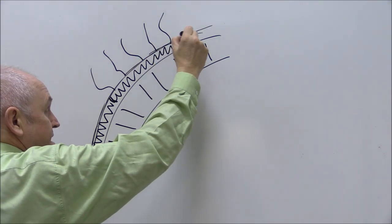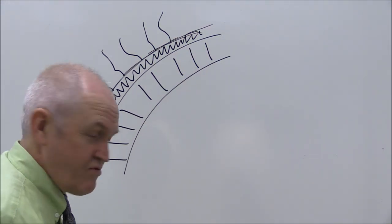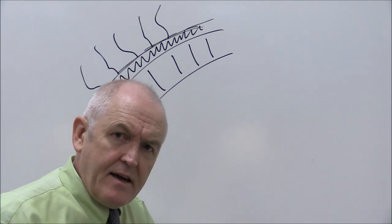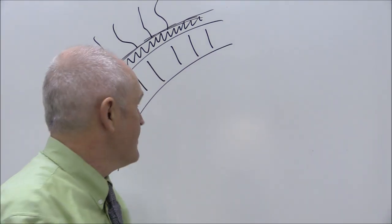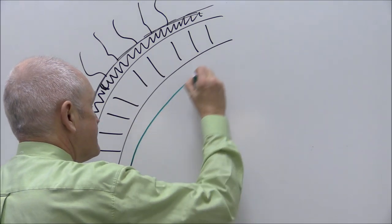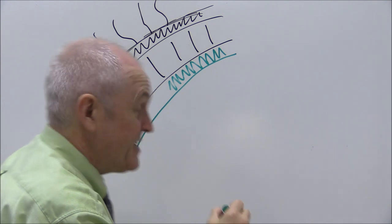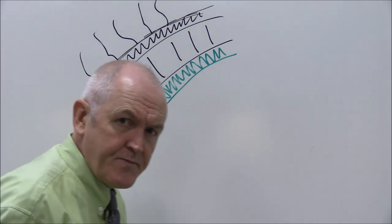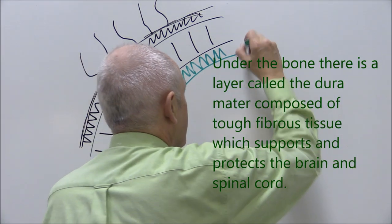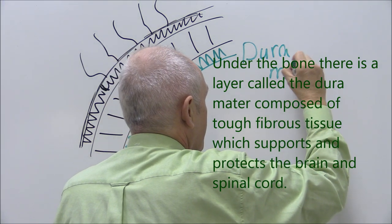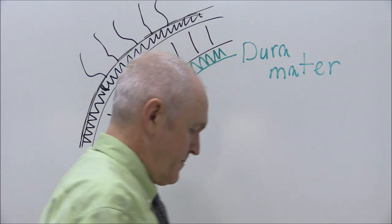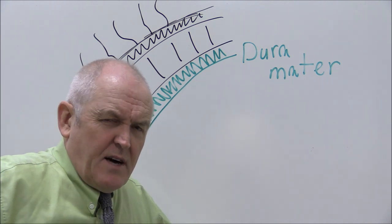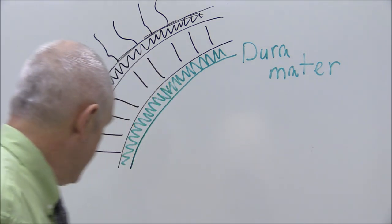Now immediately under the bone of the skull, there's a thick layer of fibrous tissue. I've drawn it a little thicker than it is to scale, but it's a nice thick layer of fibrous tissue, and this is called the dura mater. Mater is Latin for mother. This layer and these layers we're going to be considering are the mother of the brain, if that makes any sense.